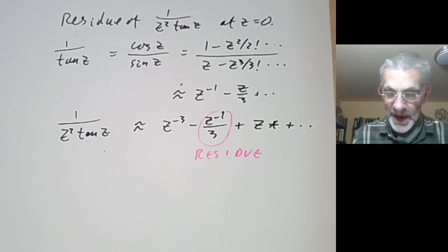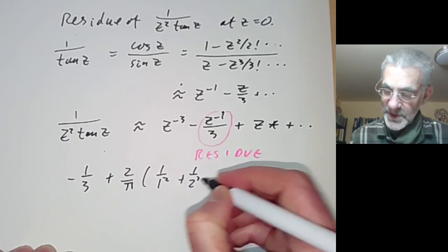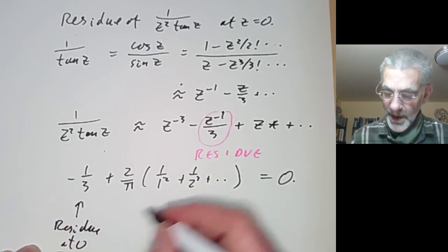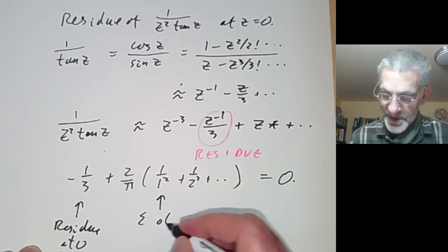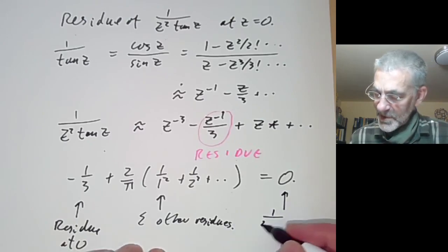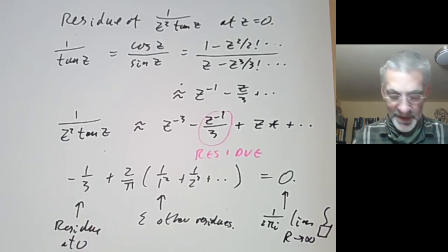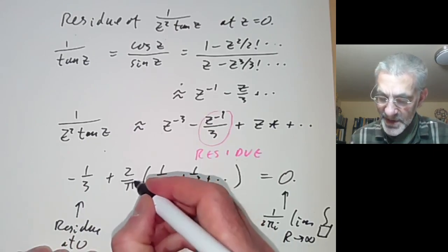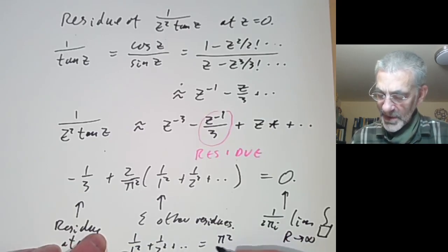So we find that −1/3 + (2/π²)(1/1² + 1/2² + …) = 0, because the residue at zero plus the sum of the other residues equals zero, and the other residues contribute 2/π² times the series. Rearranging gives us 1/1² + 1/2² + … = π²/6.